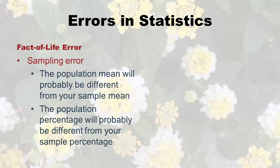Now let's talk about errors. There are actually two kinds of errors in statistics. The first kind — I call it a 'fact of life error' — is an error that just happens when you do statistics. It's not bad or good, it's just what happens. One of those is called a sampling error. The sampling error simply says the population mean will be different from your sample mean, and the population percentage will be different from your sample percentage.